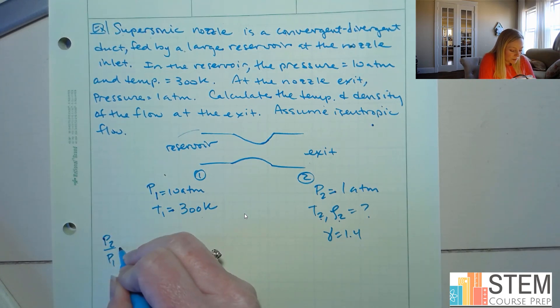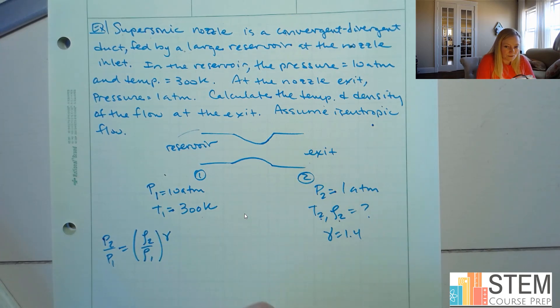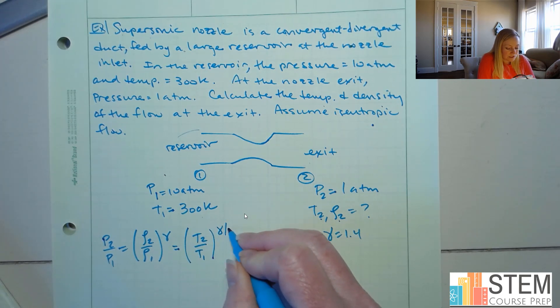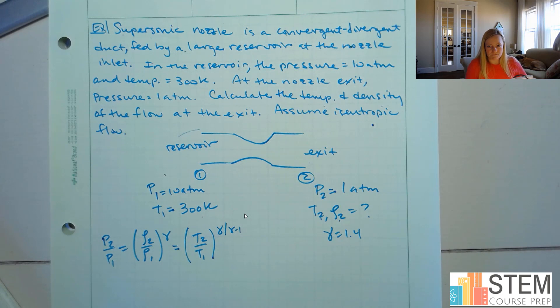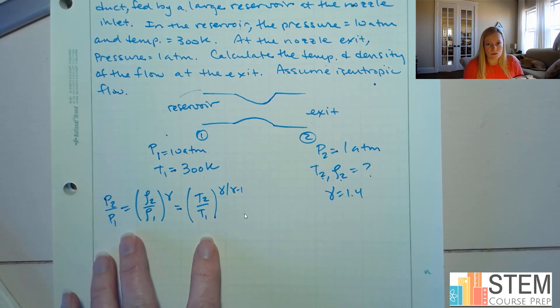So I had P2 over P1, that was equal to rho2 over rho1, raise that to the power of gamma. And we also had that relationship with temperature. So it was T2 over T1, which is gamma over gamma minus 1. Now again, we can use these equations because this is supersonic, which is high speed, and we are told to assume isentropic flow.